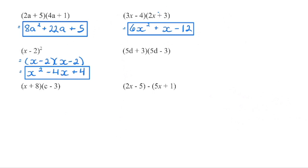We always know we're going to have the last term times itself: negative 2 times negative 2 is positive 4. So the quick way when we see a binomial squared is: square the first term (x squared), double the product (negative 2 times x is negative 2x, doubled gives negative 4x), and then square the last term (positive 4).